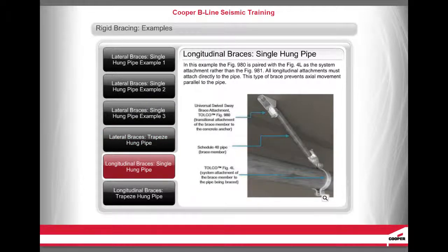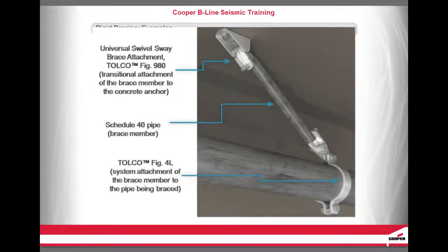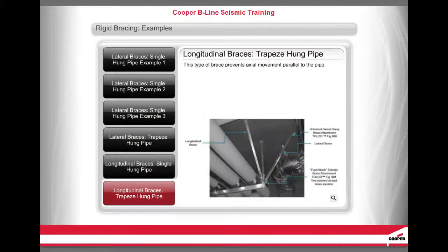In this example, the Figure 980 is paired with the Figure 4L as the system attachment rather than the Figure 981. All longitudinal attachments must attach directly to the pipe. This type of brace prevents axial movement parallel to the pipe.